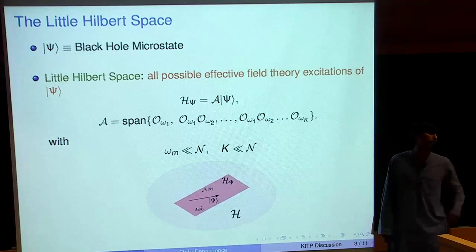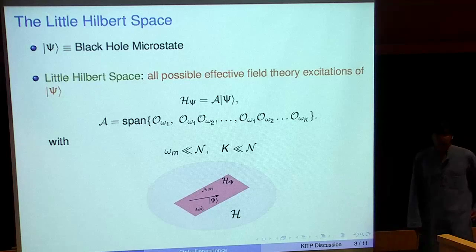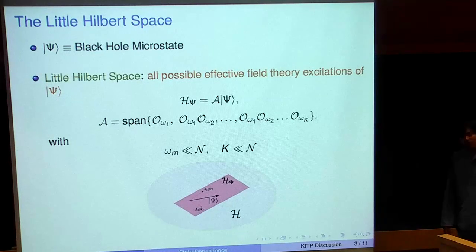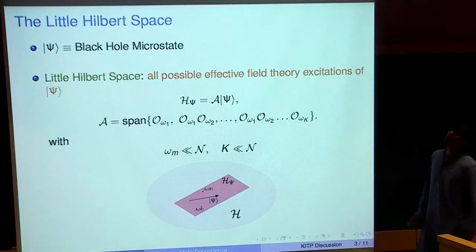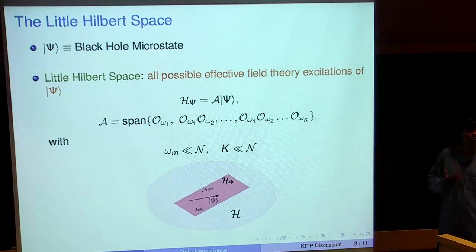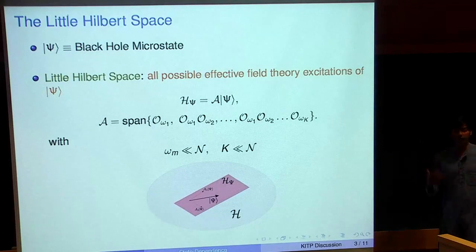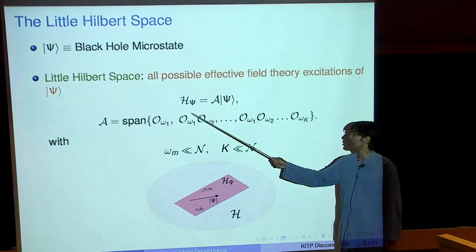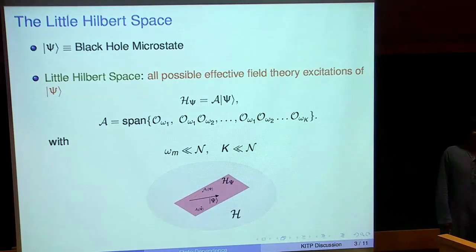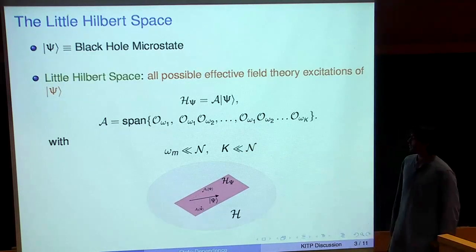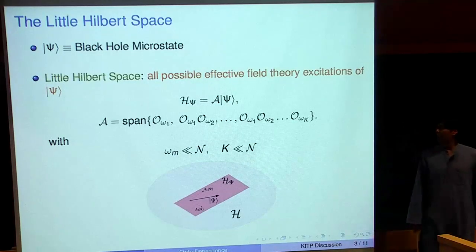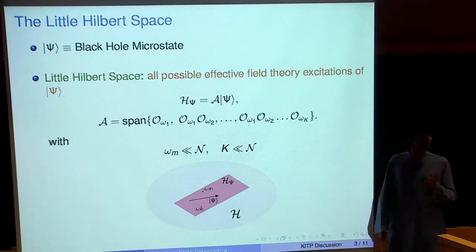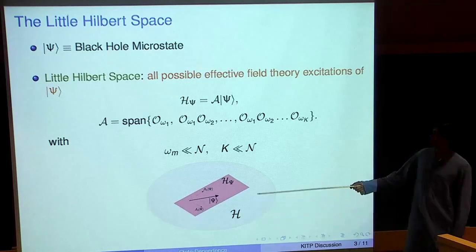Imagine you're in a certain microstate of the black hole — we're always considering states of the CFT in which there's a black hole in the bulk. It's important to introduce the notion of a 'little Hilbert space': a subspace of the full CFT Hilbert space corresponding to all possible physical effective field theory excitations you can make of this black hole microstate. You start with this microstate, act on it with modes of single trace operators in the boundary — products of such modes — but with a cutoff so the total number is smaller than the central charge of the CFT, and each mode's energy is much smaller than N.